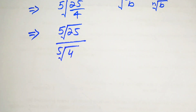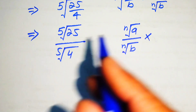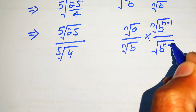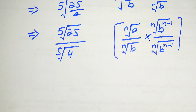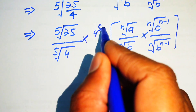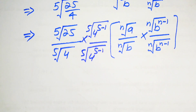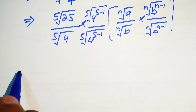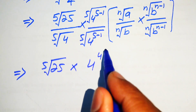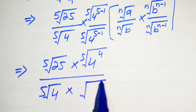We use another radical law: nth root of a divided by nth root of b — we multiply this term by b to the power of (n−1) inside the nth root. Applying this law, we multiply and divide this term by 4 to the power of (5−1) inside the 5th root. So we have the 5th root of 25 multiplied by the 5th root of 4 to the power of 4, divided by 4 to the power of 4 multiplied by the 5th root of 4 to the power of 4.